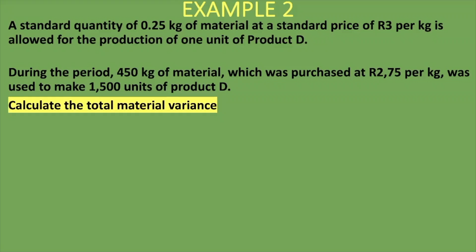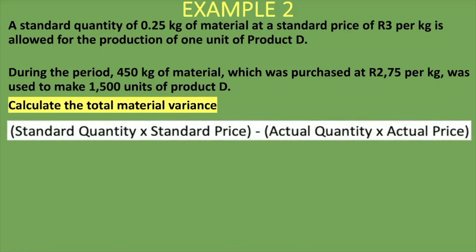I hope you attempted the question. Let's continue. We are told a standard quantity of 0.25 kg of material at the standard price of 3 rand per kg is allowed for the production of one unit of Product D. During the period, 450 kg of material purchased at 2 rand 75 cents per kg was used to make 1,500 units of Product D. Calculate the total material variance.